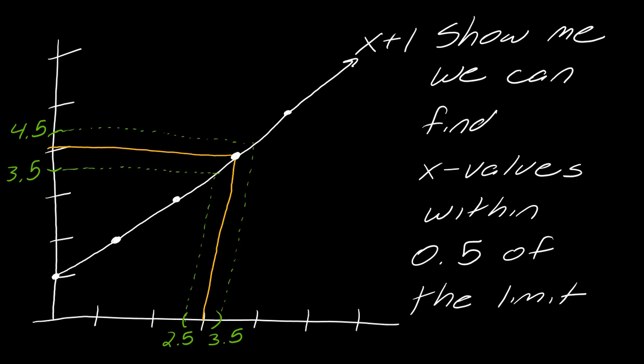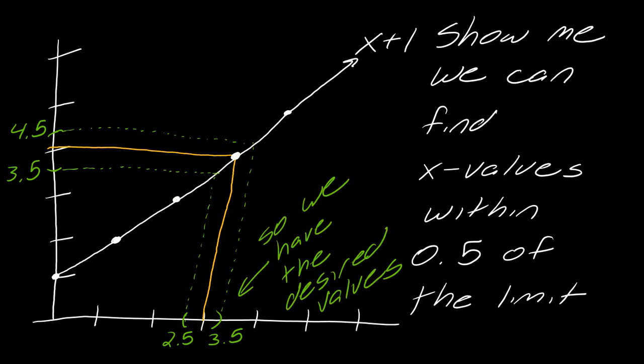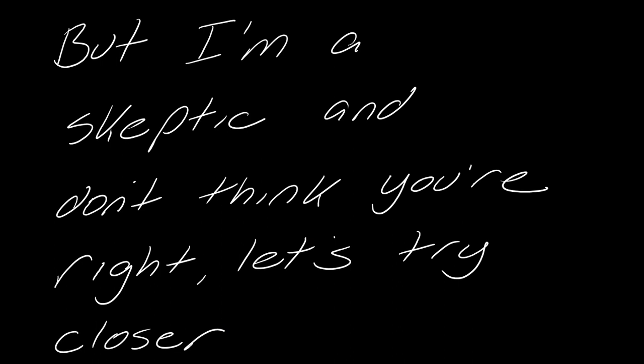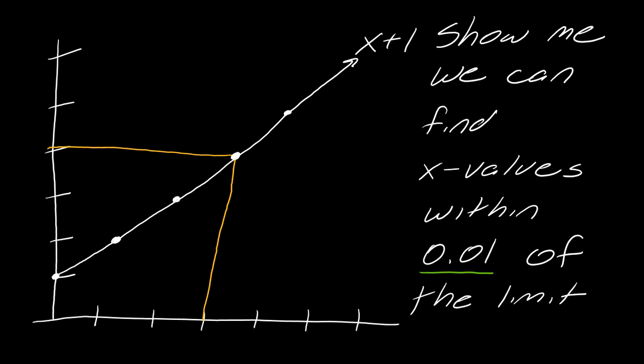So I told you I want to be within 0.5 of the limit — show me x values that would get me there — and then I will believe we have the right limit. But I am a skeptic and I still don't think you're right. I want to try closer to the limit. 0.5 is not really that close — maybe at some point the limit veers off. So I now want you to show me we can find x values within 0.01 of the limit.